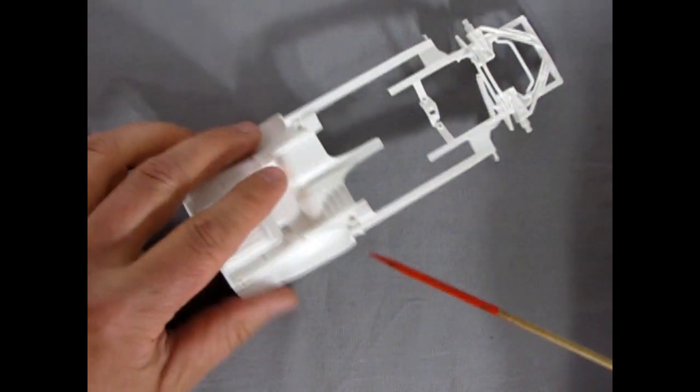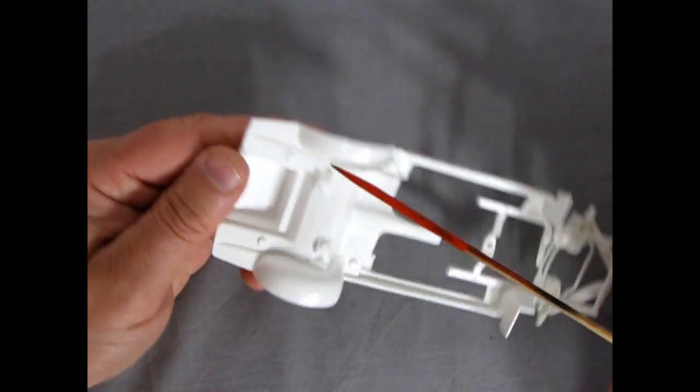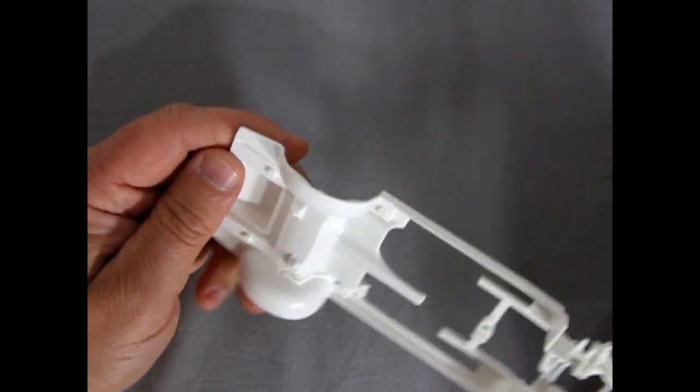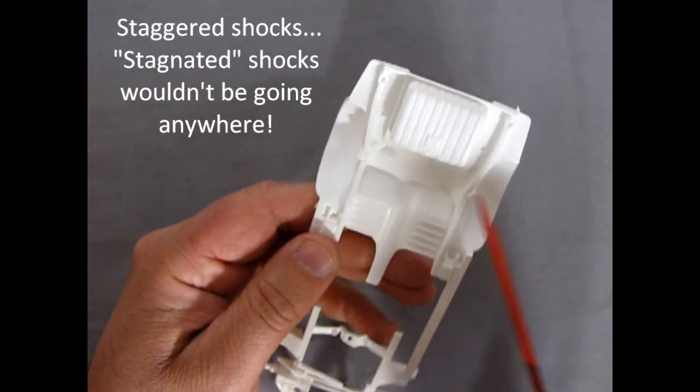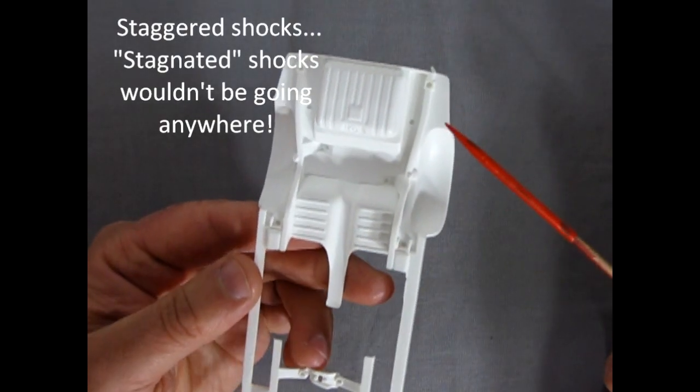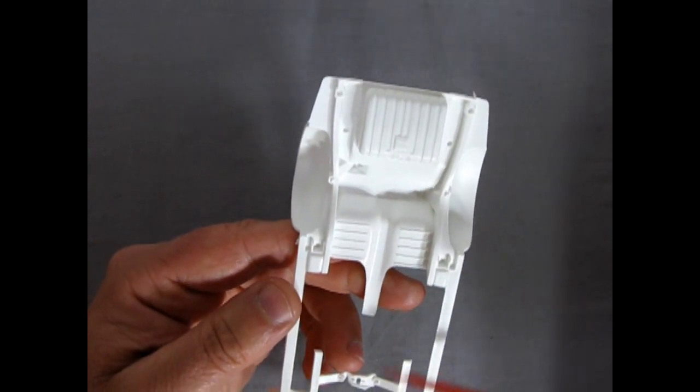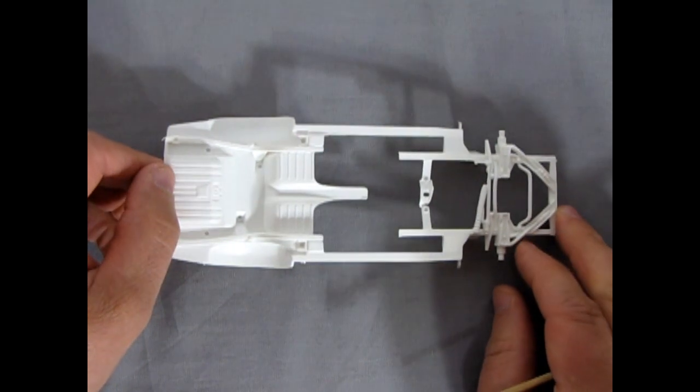A little bit of a parting line or where it was connected to the parts tree on there. The back here. Yeah, staggered shocks, one ahead, one behind. That was something Ford was trying out. Helped with stability back in the day. Nice detail on the molding in here. And again like I say, should be fairly easy to build.